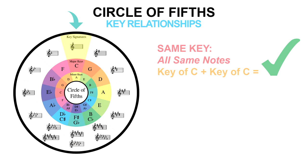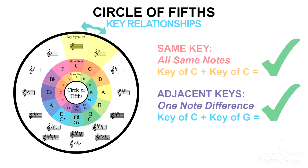As a DJ mixing two or more songs together at the same time, songs in the exact same key will mix perfectly together because their respective scales share all the same notes. And you can probably mix two songs whose keys are a fifth step apart fairly easily because they share all the same notes in their respective scales except for one.